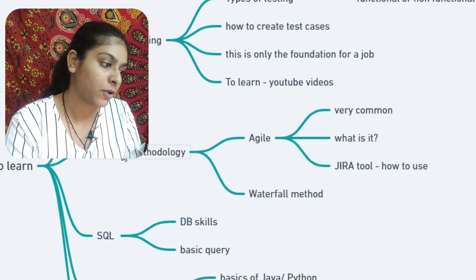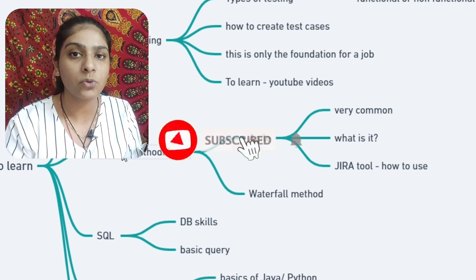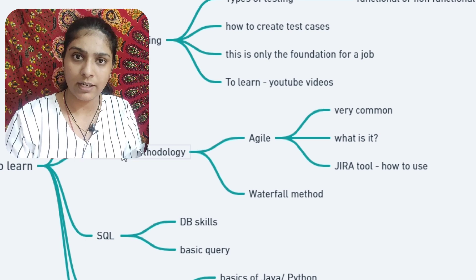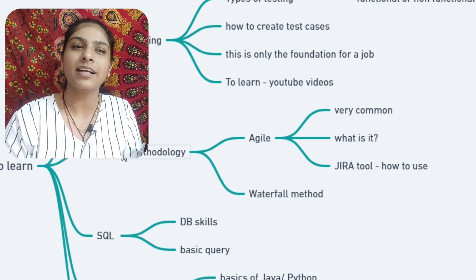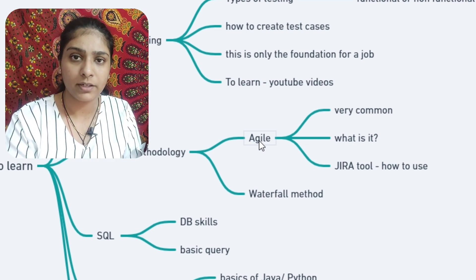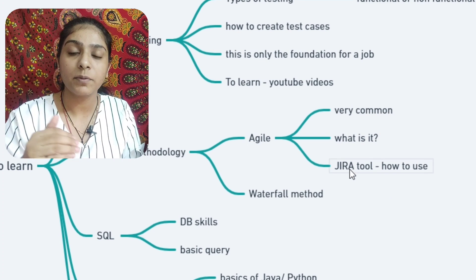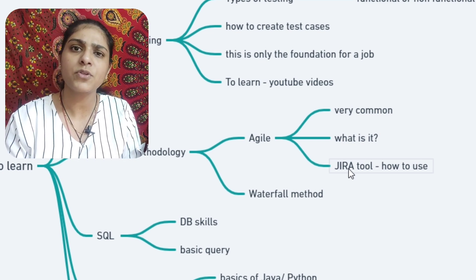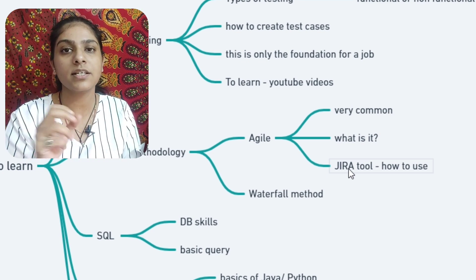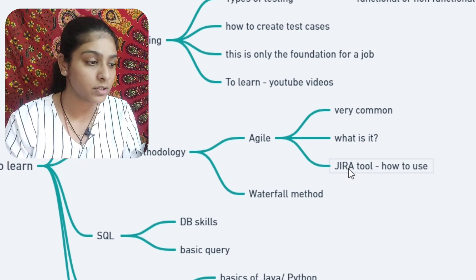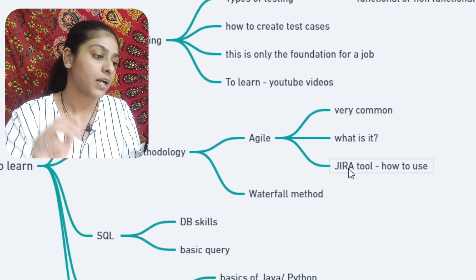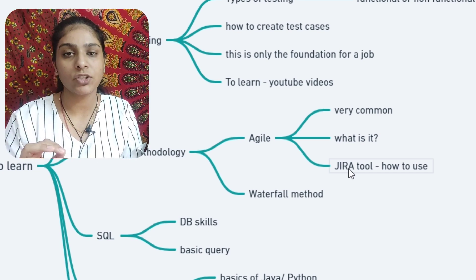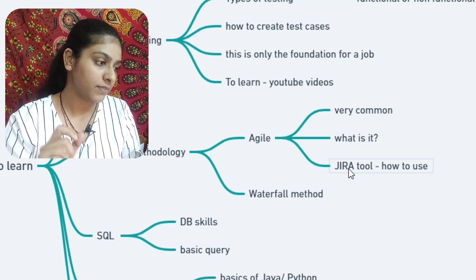You can also learn new things about Agile. The main tool for software testing in Agile is Jira. Jira is used to manage lists, track requirements, and manage the project lifecycle. You can use it as a free source and learn how to use the Jira tool.